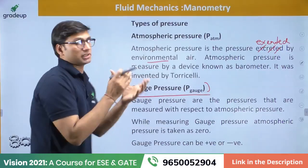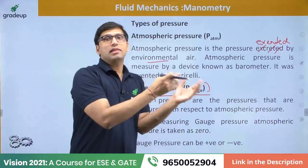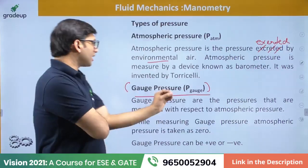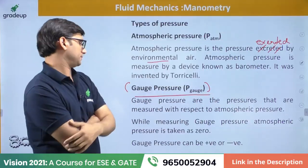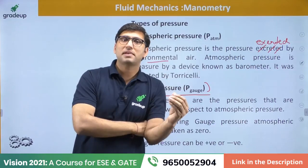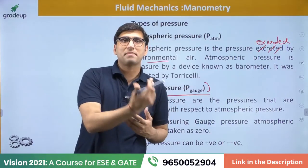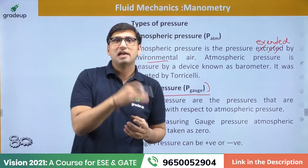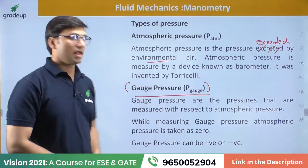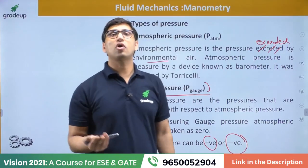Gauge pressure is the pressure that is measured with the help of mechanical gauges — pressure measured with respect to atmospheric pressure. If you measure the pressure using a manometer, that pressure is called gauge pressure. We have to convert gauge pressure into absolute pressure. Gauge pressure can be positive or negative; negative gauge pressure is also called vacuum pressure.